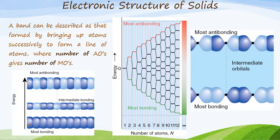A band can be described as something formed by bringing atoms successively together to form a line of atoms, where the number of atomic orbitals gives us the exact same number of molecular orbitals. In the first diagram at the bottom, we see bands of bonding orbitals, then some intermediate bonding orbitals where you start to notice the change from bonding to antibonding, and then at the top are the most antibonding, which are obviously higher in energy.